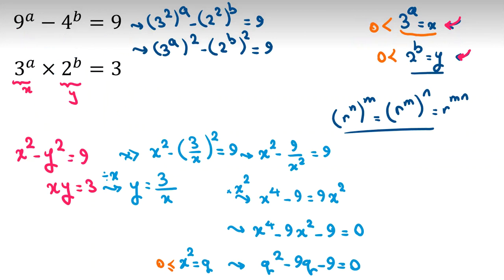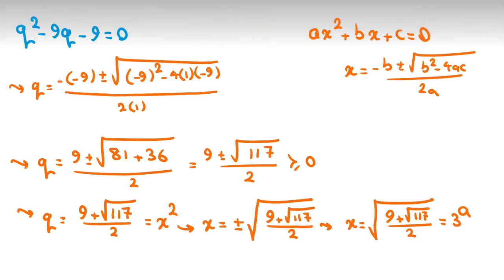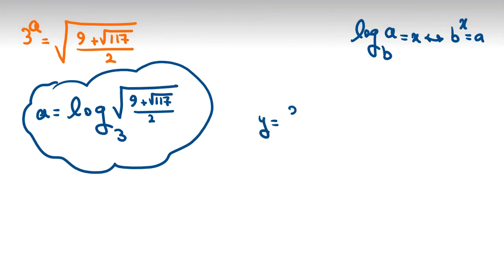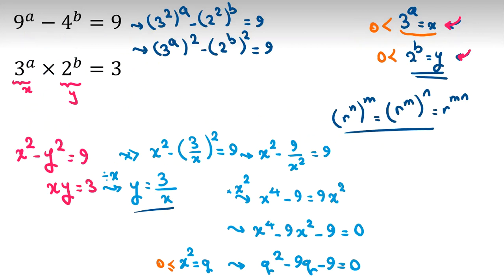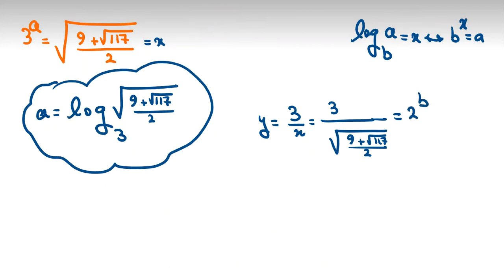Now let's find B. Since 2 to the B is Y and Y equals 3 over X, we have Y equals 3 over the square root of (9 plus square root of 117) over 2. Since Y was 2 to the B, by the definition of logarithm, B equals log base 2 of 3 over the square root of (9 plus square root of 117) over 2.